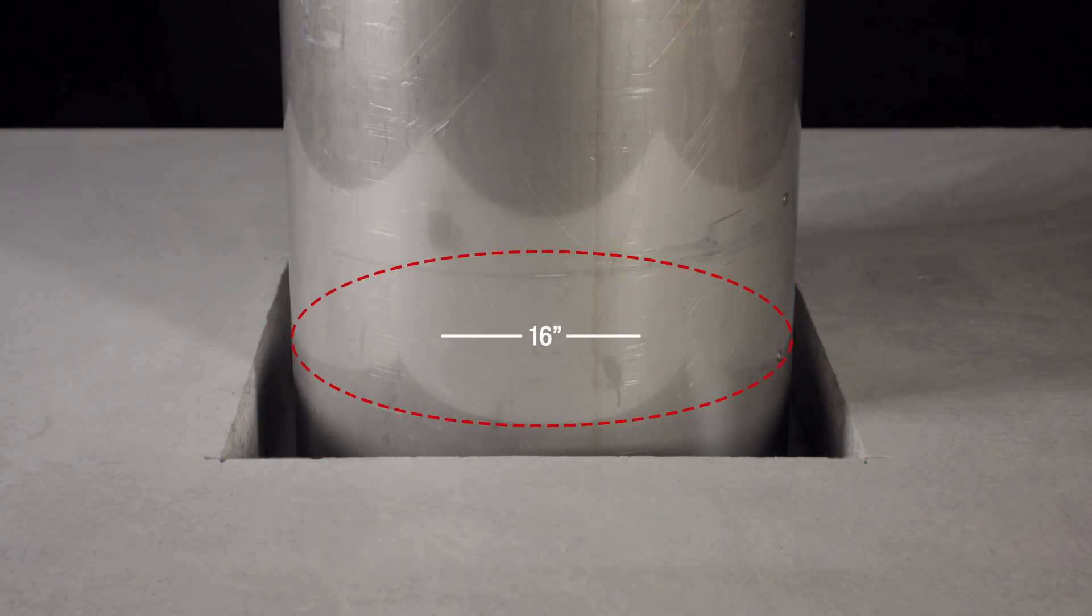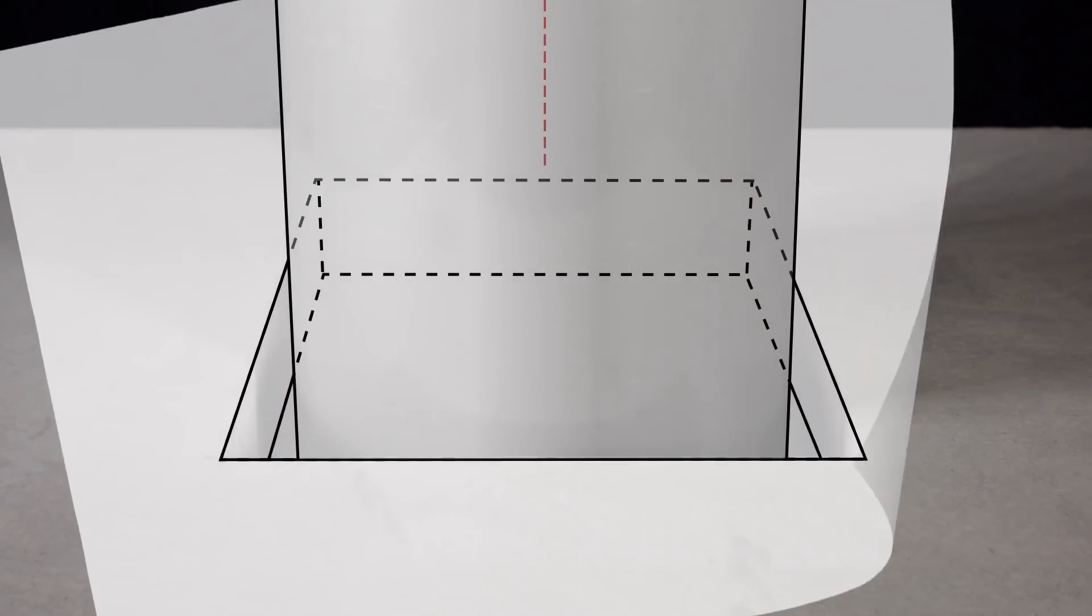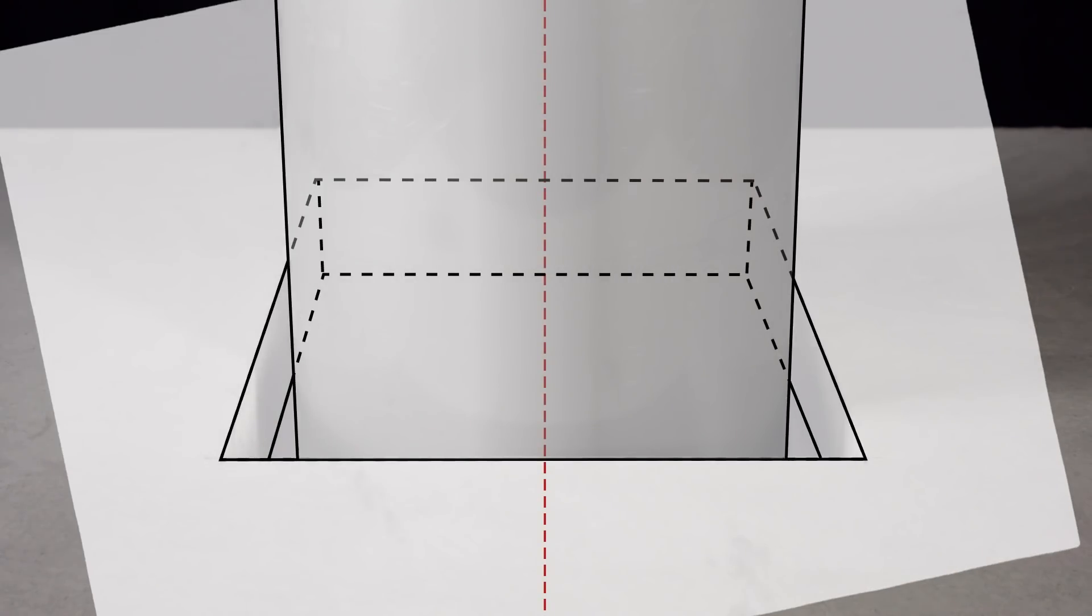For example, the duct shown here has an outer diameter of 16 inches, so the opening in the floor or ceiling is an 18 to 19 inch square. Once this is confirmed, you can center a section of duct through the floor or ceiling.